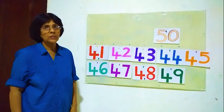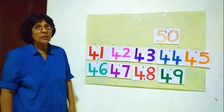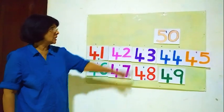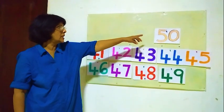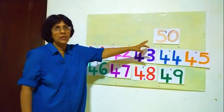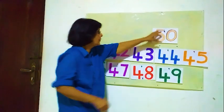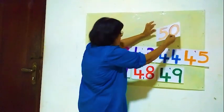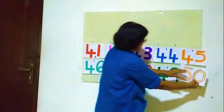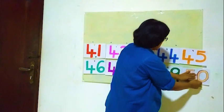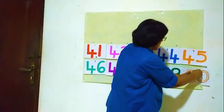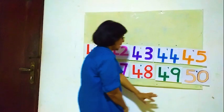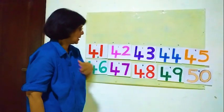After 49, what is the last number? 50. The number 50 must come here. Now after 49, 50.